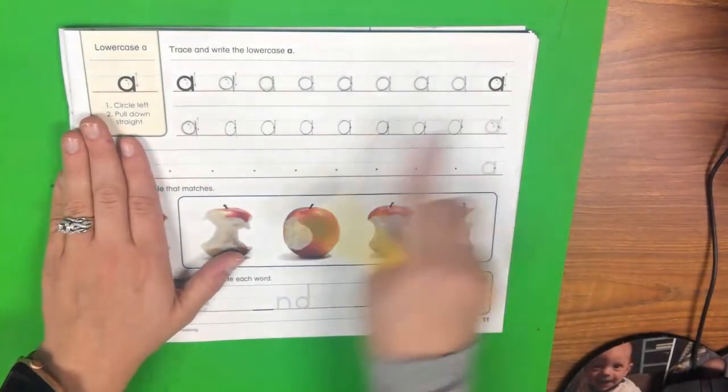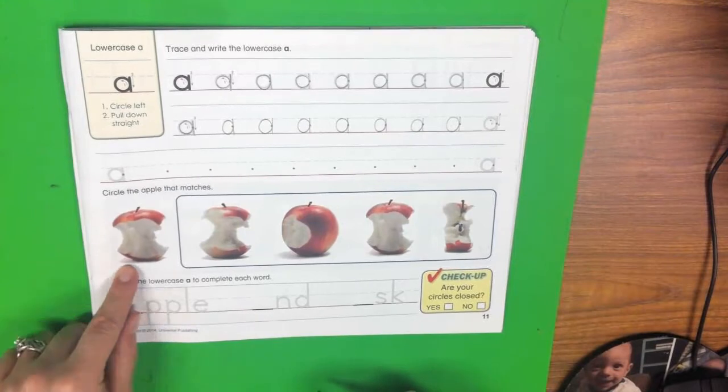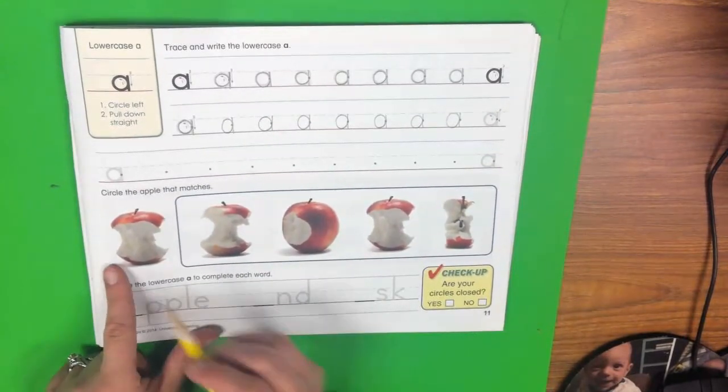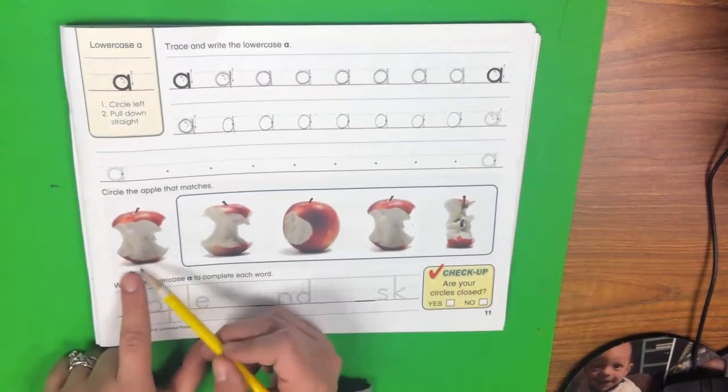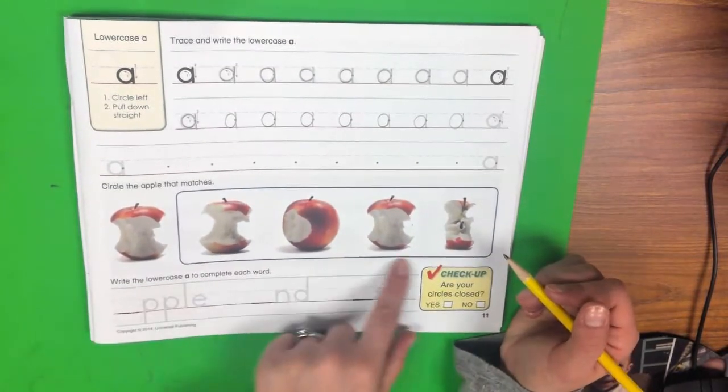All right, so I filled up this line. You're going to fill up both lines. Then you're going to come down here and it says circle the apple that matches. Which one of these apples matches? You're going to circle the one that matches.